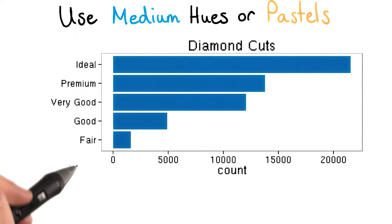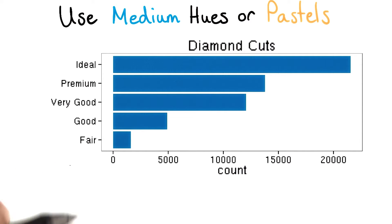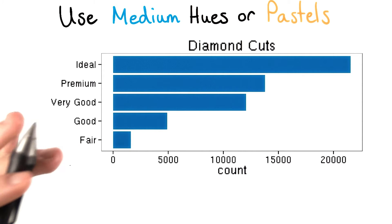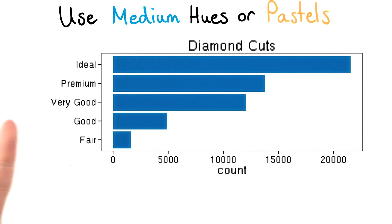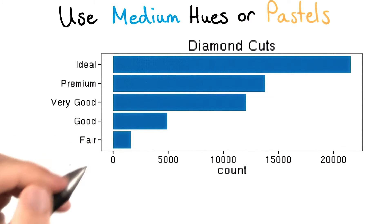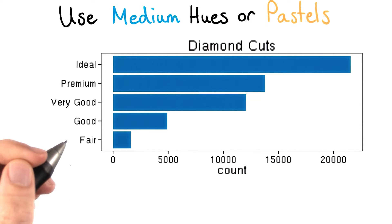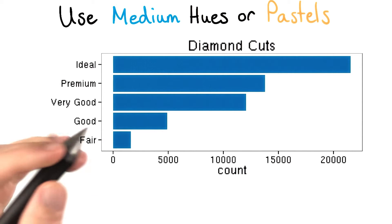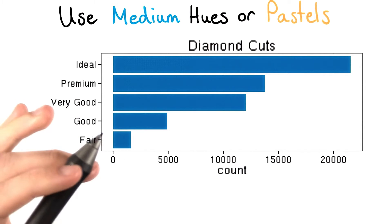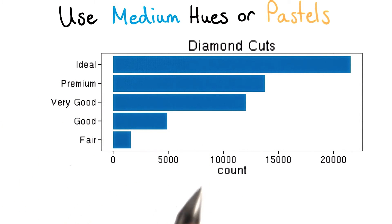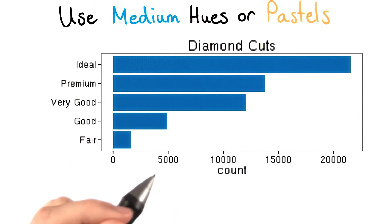If you are going to use color, consider using less intense colors, such as natural colors or pastels. You can also add some gray value to bright colors to make them less vibrant. Colors with higher gray values have a softer feel, and the eye can concentrate on them for longer periods of time.